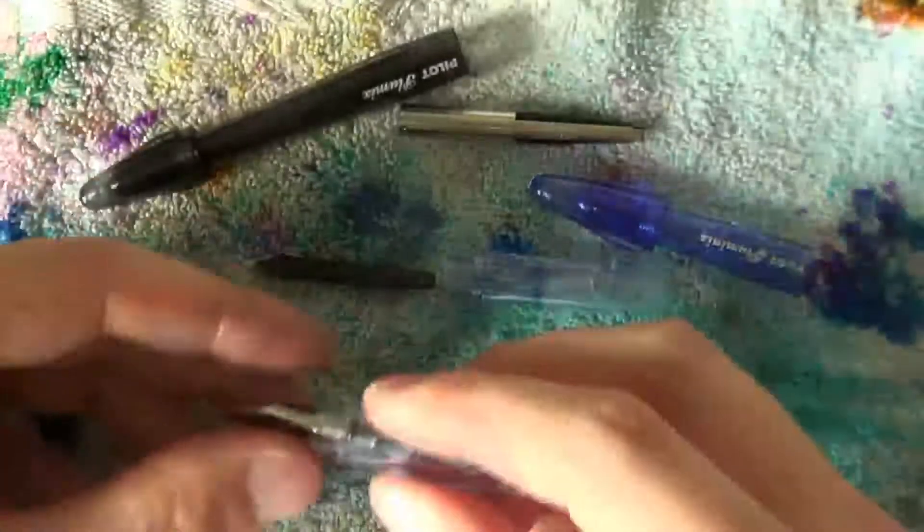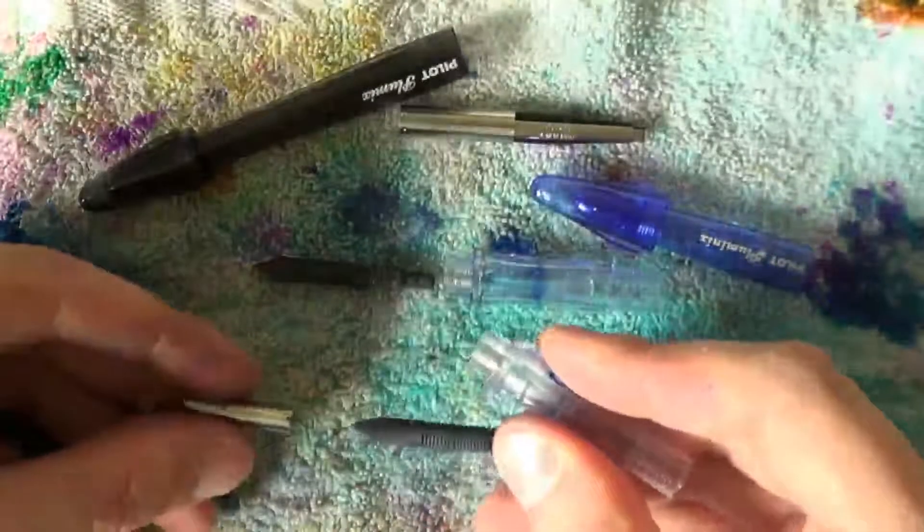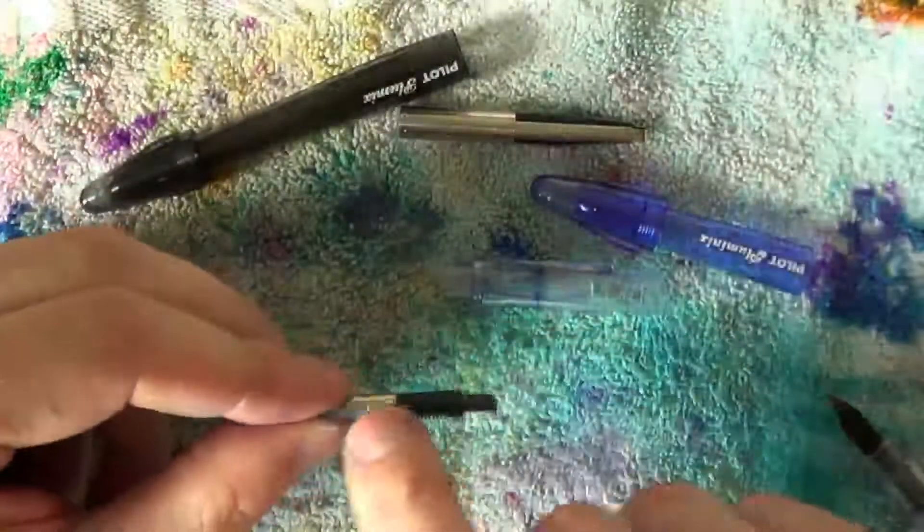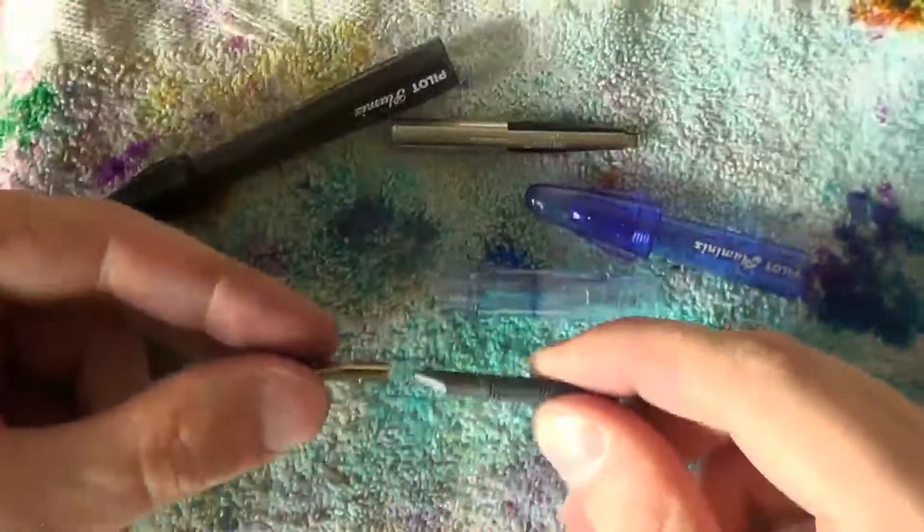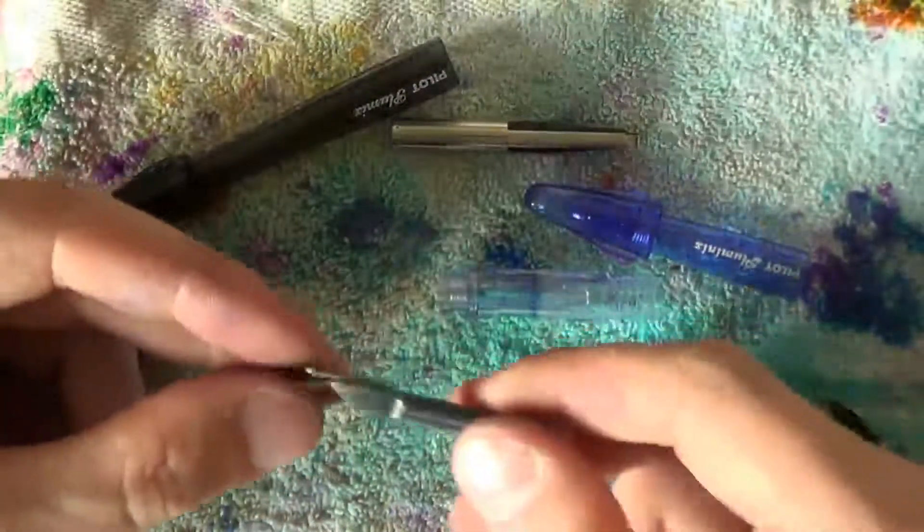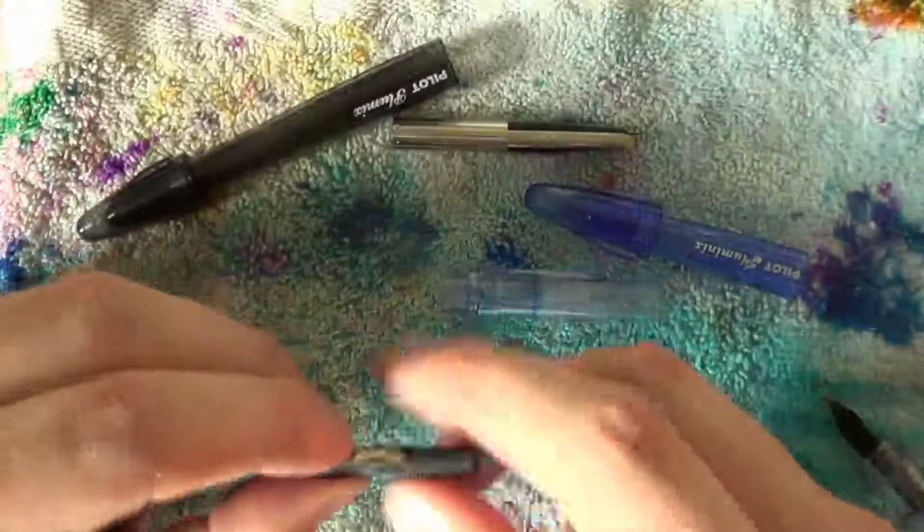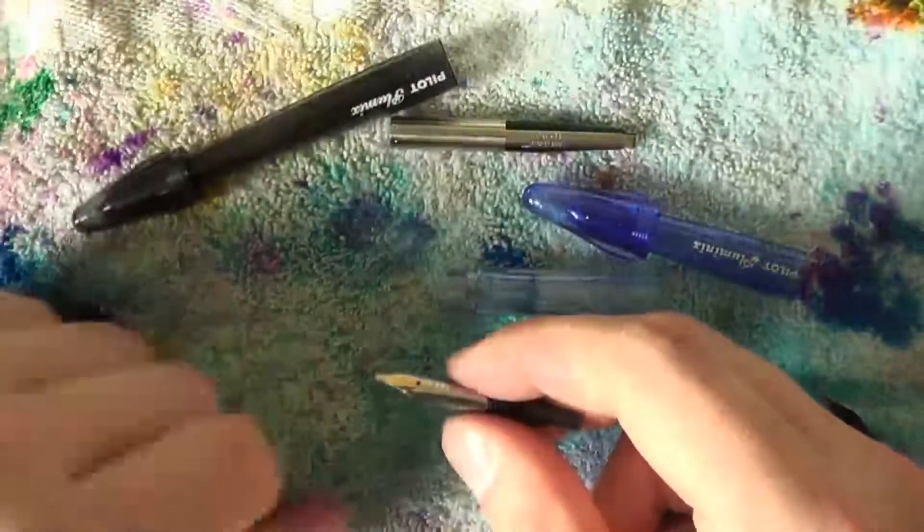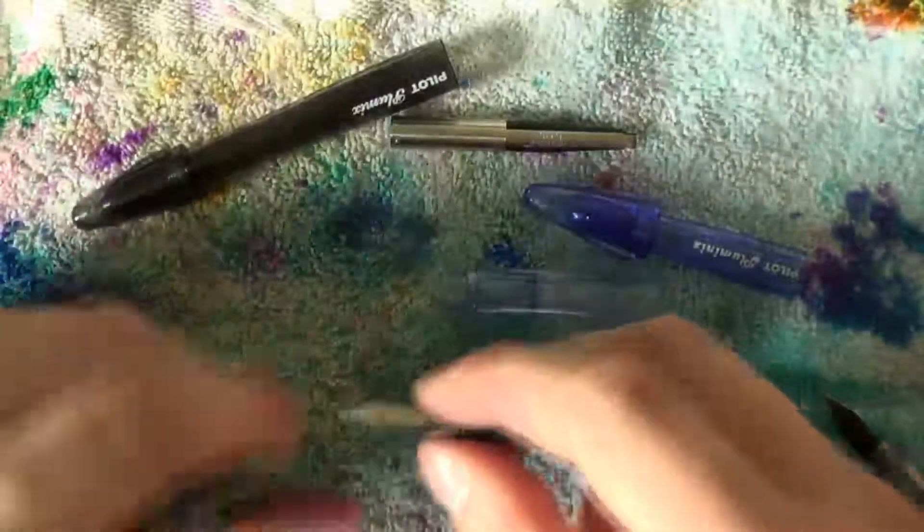It's the exact same thing with the Pluminix. Note how the nib is actually slotted onto the feed. It can be taken off and replaced, so it's very easy to switch nibs from the Plumix to the Pluminix, or the 78G, or the Penmanship. They will have the same basic properties.